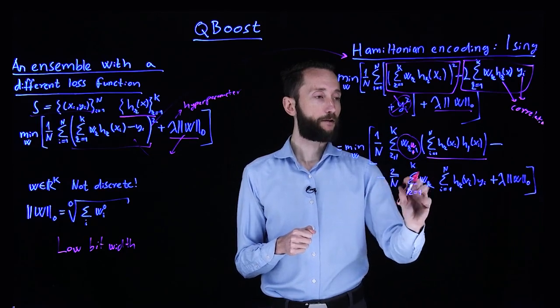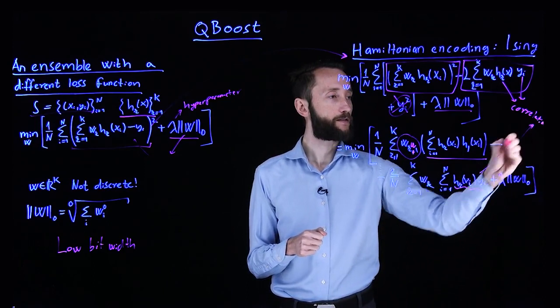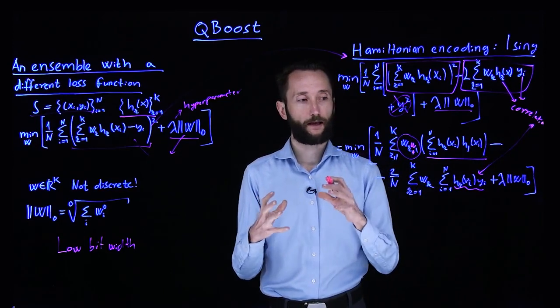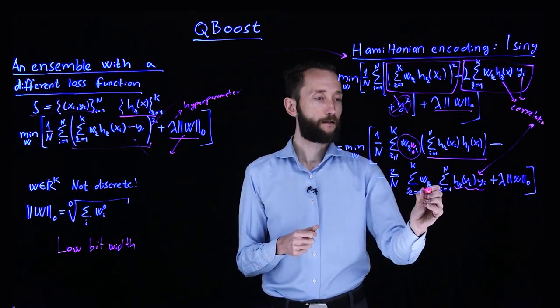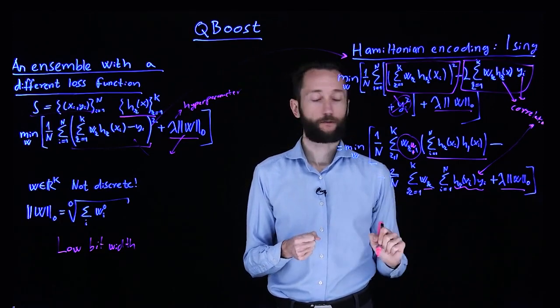Then you have this term where you measure the same thing as before. So this is the same kind of correlation between the label and the actual model, weighted by the actual weight in the weight vector, plus this regularization term.